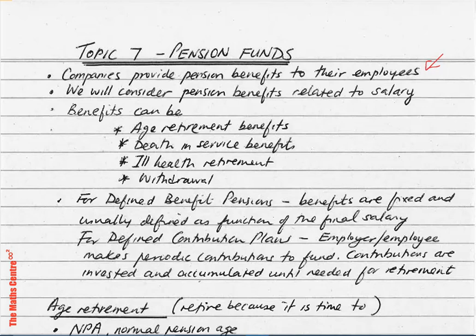We will consider pension benefits related to salary. There are four main kinds of benefits we'll be looking at. Age retirement benefits are paid when you retire at your retirement age, because you have attained normal retirement age. You can also have death in service benefits — that means when the member of the scheme dies while in service, a benefit is paid.